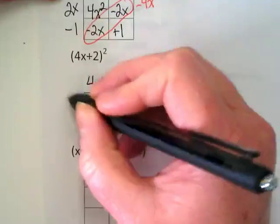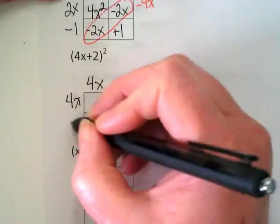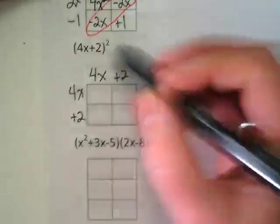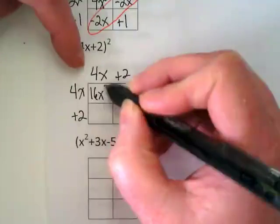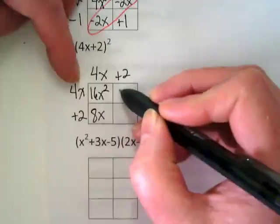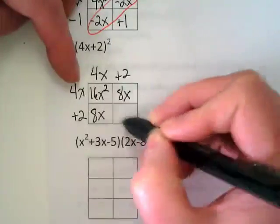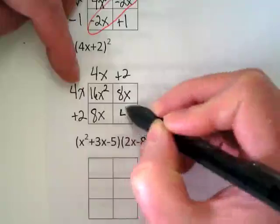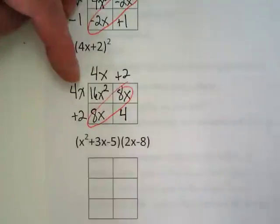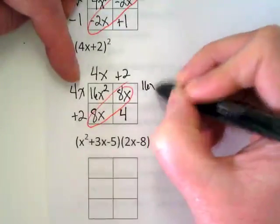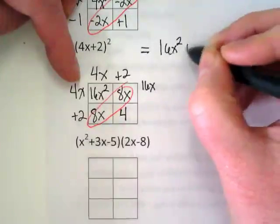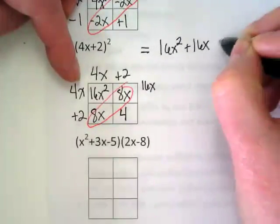4X plus 2 and 4X plus 2. Let's pay attention to what happens with the like terms on this one. We end up first with 16X squared and then 8X and then the last term is 4. So this equals 16X squared plus 16X plus 4.